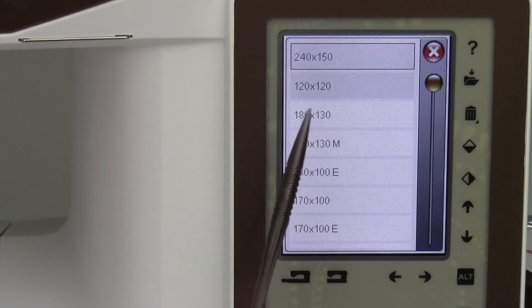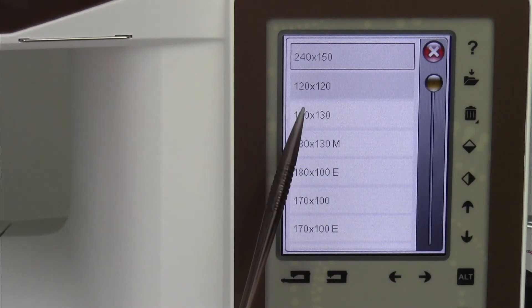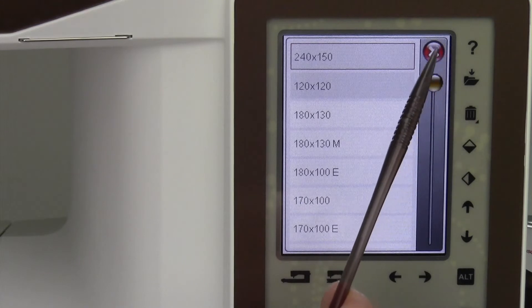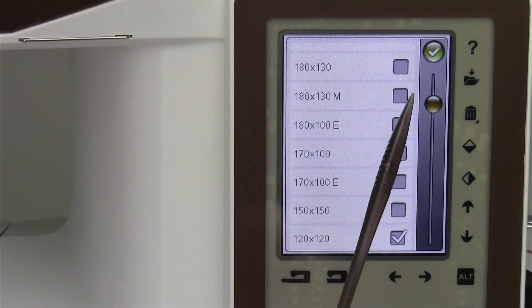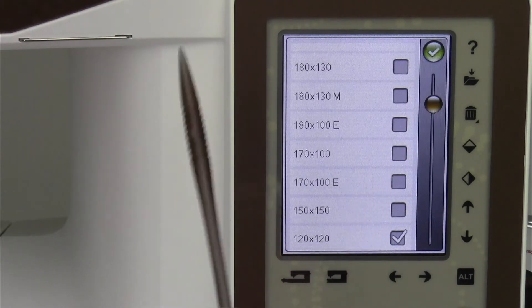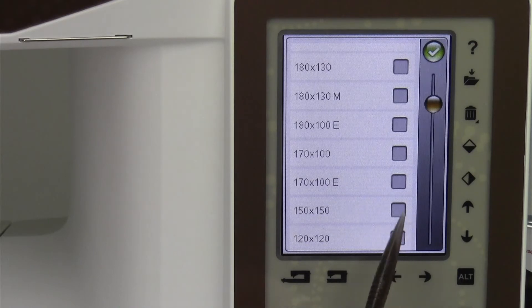Now, the one thing you have to remember is if you purchase a third hoop, you need to come back into the settings and tell the machine which hoop you purchased. Otherwise, it won't let you use it, it won't recognize it, so that's just something to kind of keep in mind.